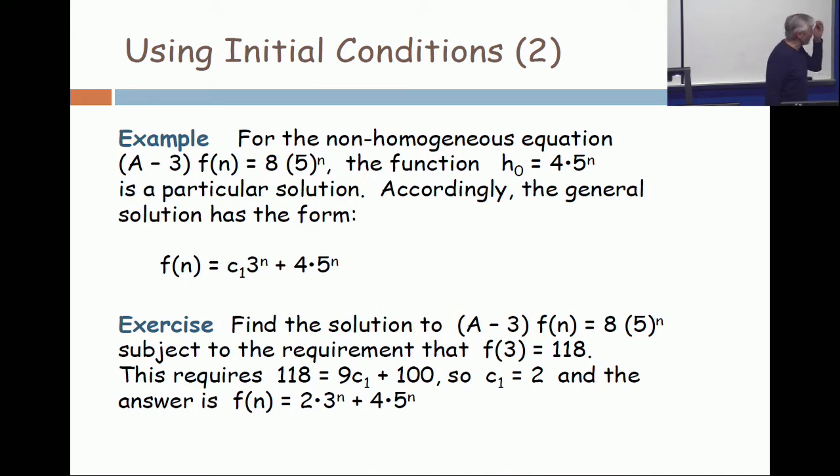So if it's f(2) is 118, then this requires 118 is c_1 times 3 squared. 3 squared is 9, so that's 9c_1, plus 4 times 5 squared. 5 squared is 25, 4 times 25 is 100. So it requires 9c_1 plus 100 is 118. 9c_1 is 18. c_1 is 2.